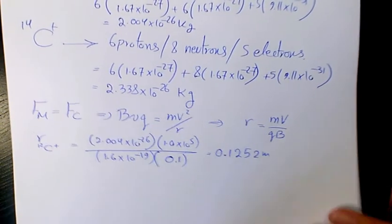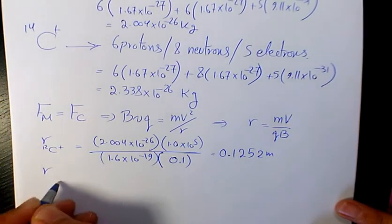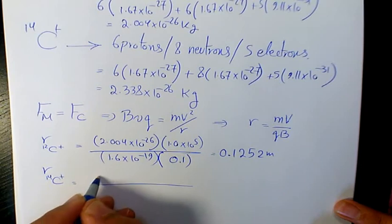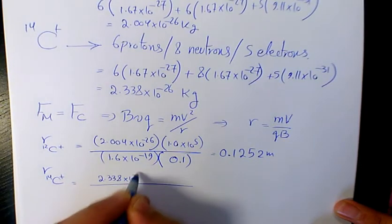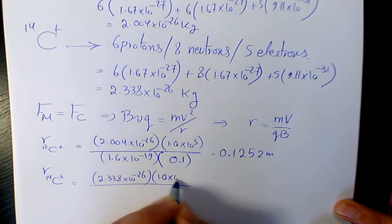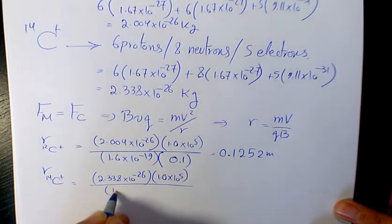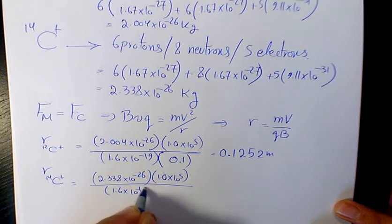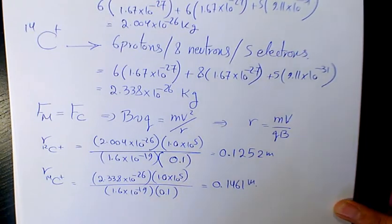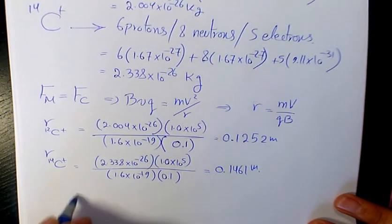For C14+, r = (2.338 × 10^-26)(1.0 × 10^5) / [(1.6 × 10^-19)(0.1)] = 0.1461 meters.